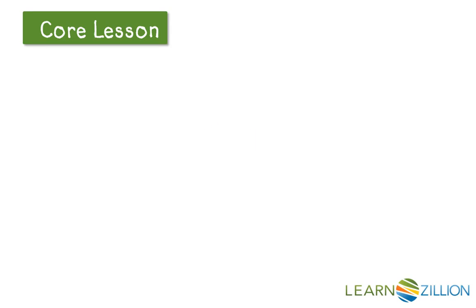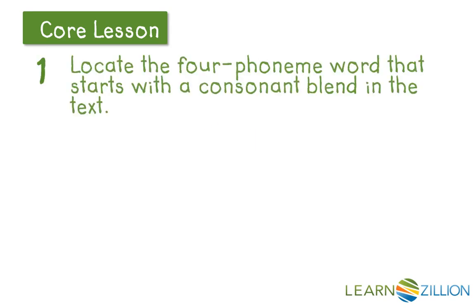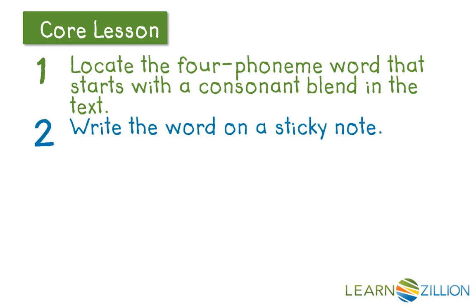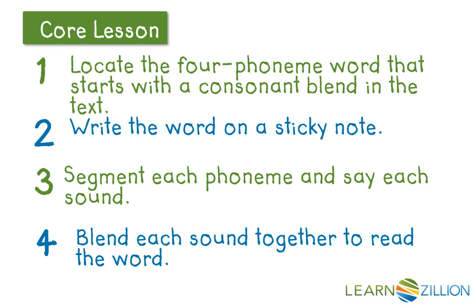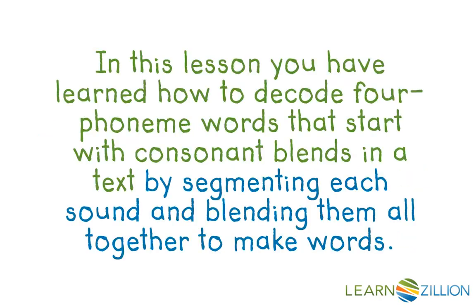Let's look at the steps it took to decode that word. Locate the four-phoneme word that starts with the consonant blend in the text. Write the word on a sticky note. Segment each phoneme and say each sound, then blend each sound together to read the word. In this lesson, you have learned how to decode four-phoneme words that start with consonant blends in a text by segmenting each sound and blending them all together to make words.